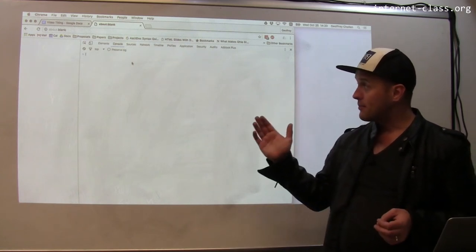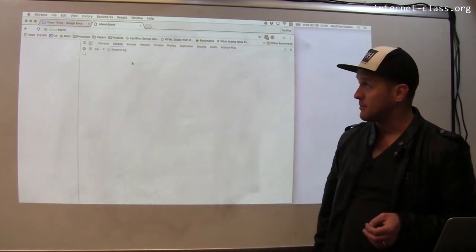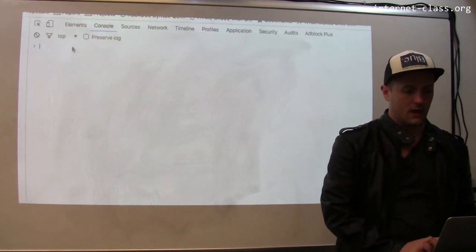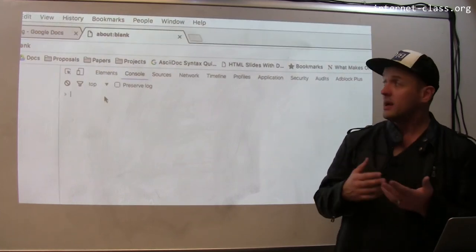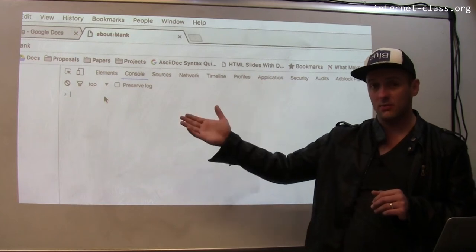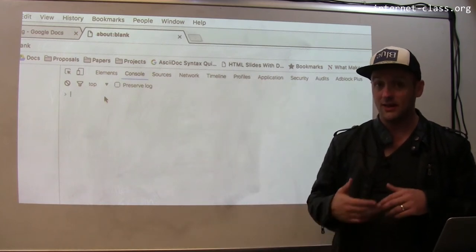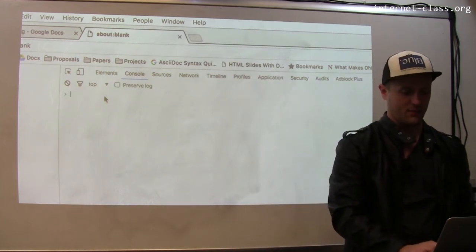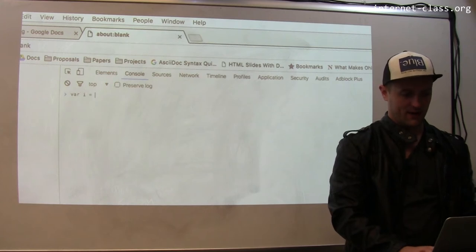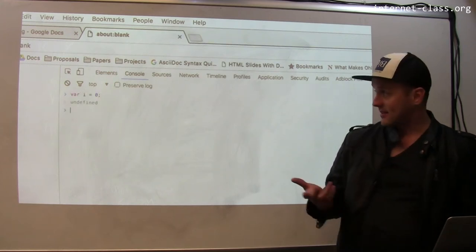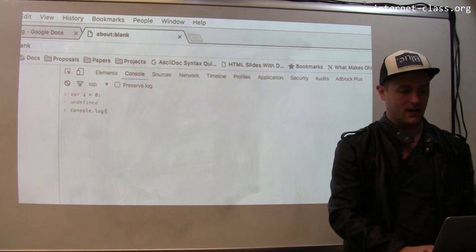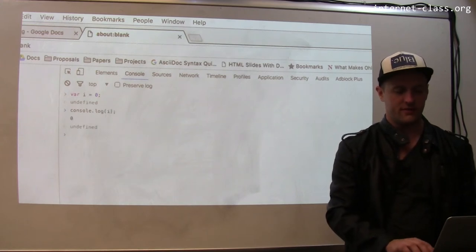If you open up this page, just the Chrome page about blank, open up your development console. When you're at the console here, this is a JavaScript interpreter. I can write JavaScript in here, and the browser will run it for me. For example, I can initialize a variable i and set it to zero, and then I can print the value of i, which is zero.